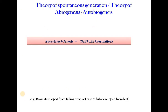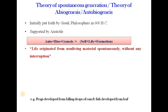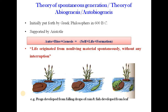Our next theory is the Theory of Spontaneous Generation, also called the theory of Abiogenesis or Autobiogenesis, which means self-life formation. Initially, this theory was put forth by Greek philosophers in 600 BC and was supported by Aristotle. This theory proposed that life originated from non-living material spontaneously without any interruption. For example, frogs must have developed from falling drops of rain, and fish developed from leaves.